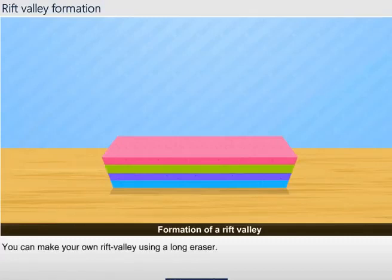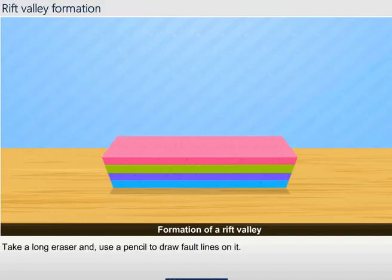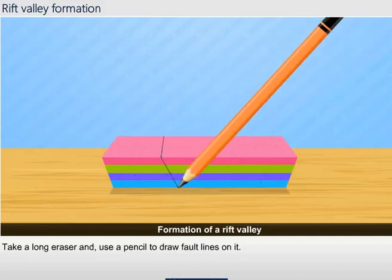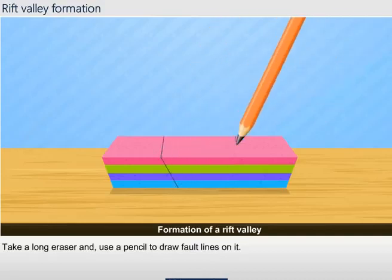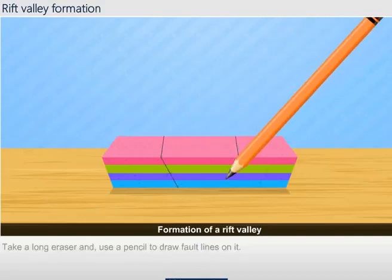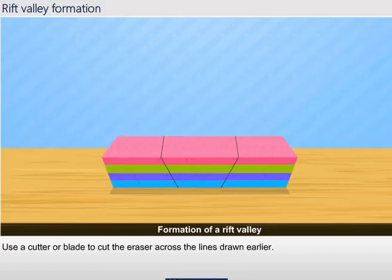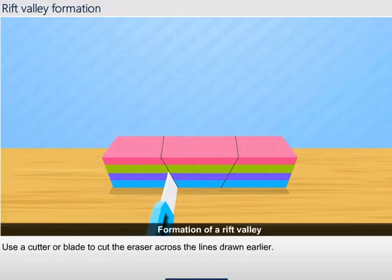You can make your own rift valley using a long eraser. Take a long eraser and use a pencil to draw fault lines on it. Then use a cutter or blade to cut the eraser across the lines drawn earlier.